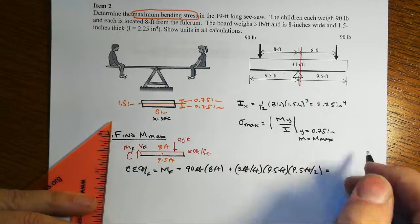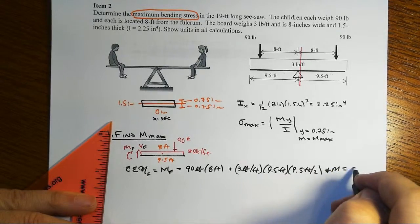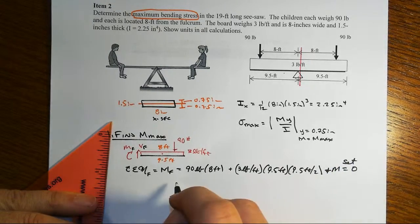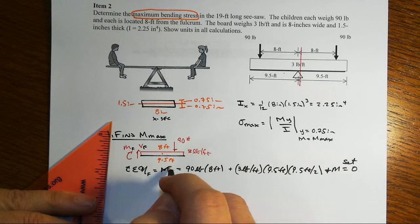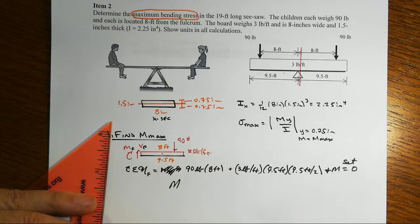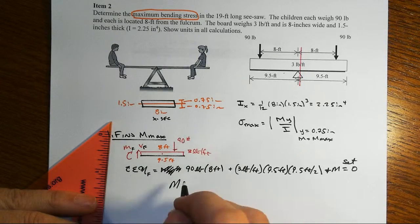And then plus M, set it equal to 0 for equilibrium, and our maximum moment, the moment at F, let's get that equation to look proper here.